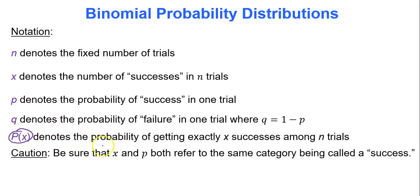Be sure that X and P both refer to the same category called a success. For instance, if you're flipping a coin and looking at the coin landing on heads, a success would be heads — that's the behavior you're looking for — so P should correspond to the probability of getting heads.